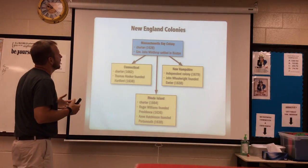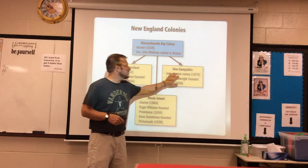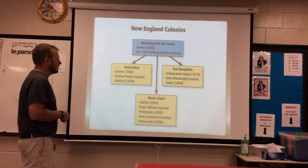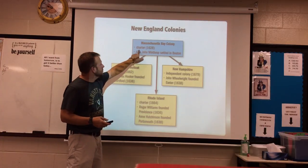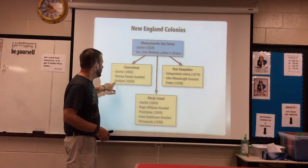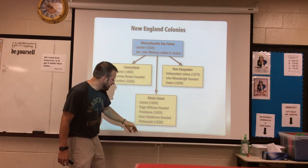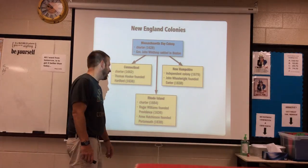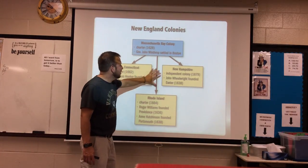Here's a quick chart for a breakdown of the colonies. The Massachusetts Bay Colony was chartered in 1628. Connecticut split off and was chartered in 1662, though Thomas Hooker founded it in 1636. New Hampshire split off and was founded in 1638, chartered in 1697. Rhode Island was founded by Roger Williams in 1636, and Ann Hutchinson came down and founded Portsmouth in 1638. Just remember that from the Massachusetts Bay Colony came Connecticut, New Hampshire, and Rhode Island.